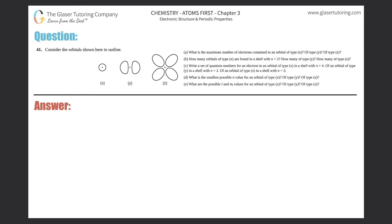Problem 41: consider the orbitals shown — x, y, and z — with options a through e. Part a asks: what is the maximum number of electrons contained in an orbital of type x, type y, or type z? So let's label the answer choices a, b, c, d, and e. We want the max number of electrons in any specific orbital, no matter whether it's x, y, or z.